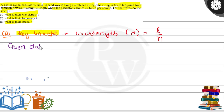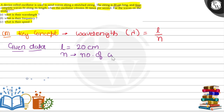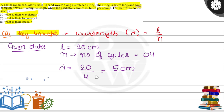Let's look at the given data. The string is 20 centimeters long — that means the length of the string is 20 centimeters. There are four complete waves, so n represents the number of cycles, which is 4. Using the formula, lambda equals L divided by n, so lambda equals 20 centimeters divided by 4, which gives us 5 centimeters.